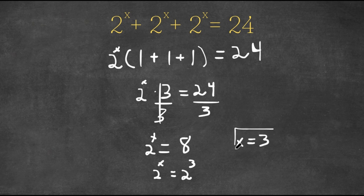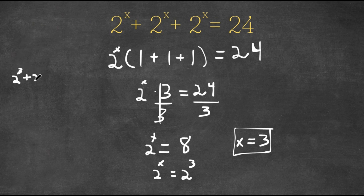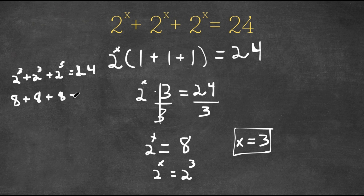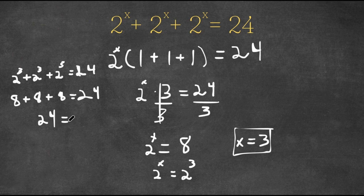So x equals 3 is our answer. Now if I plug this into our equation, we have 2 to the power of 3 plus 2 to the power of 3 plus 2 to the power of 3 equals 24. Now 2 to the power of 3 is 8, so we have 8 plus 8 plus 8 equals 24. Since 8 plus 8 is 16 and 16 plus 8 is 24, we get 24 equals 24. So we know our solution is correct.